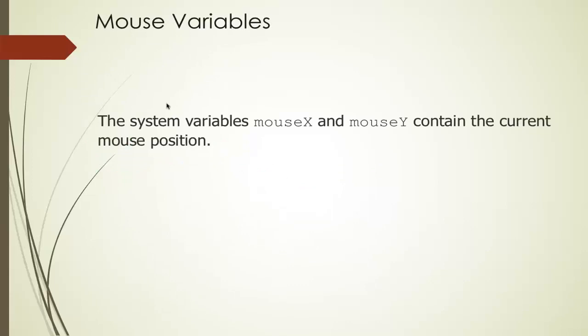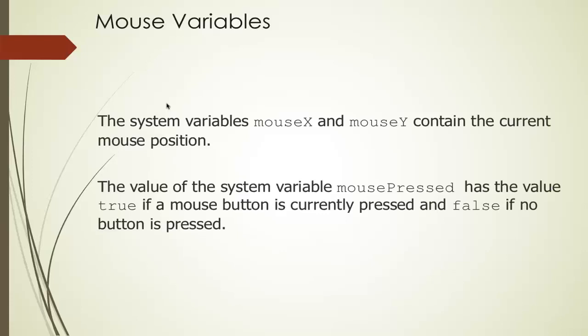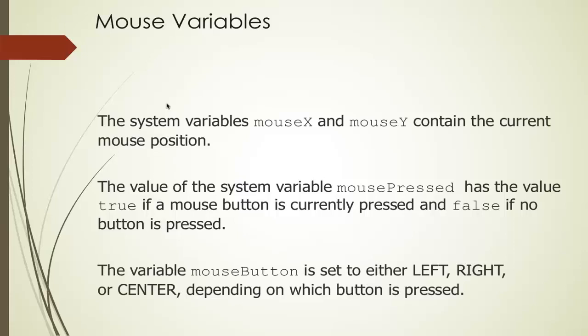We saw before that mouseX and mouseY contain the current mouse position on the screen. The system variable mousePressed is a Boolean variable that has the value true if a mouse button is currently pressed and false if no button is pressed. And the system variable mouseButton is set to either left, right, or center, depending on which button is pressed.